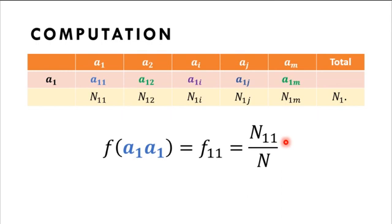And that can be computed by dividing N11 all over N. So, N11, again, is the number of individuals with A1, A1 genotype. And then, N represents the total number of individuals in the population.